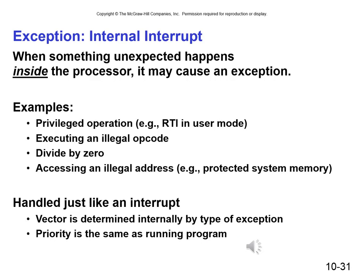Exception handling is an internal interrupt — when something unexpected happens inside the processor in supervisor mode. This includes when a privileged operation experiences an error, executing an illegal opcode, divide by zero, or accessing an illegal address. These are all handled just like an interrupt, except the vector is determined internally by the type of exception and stored in the exception vector table.